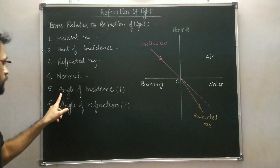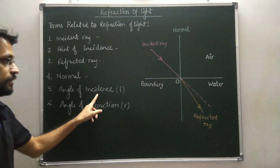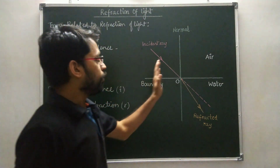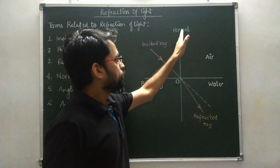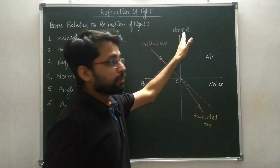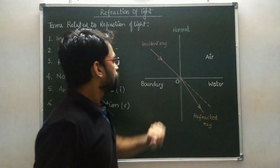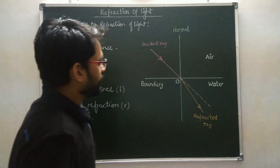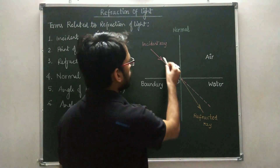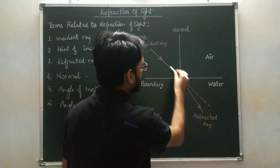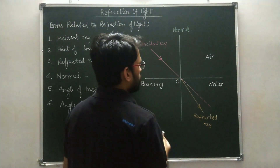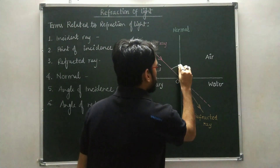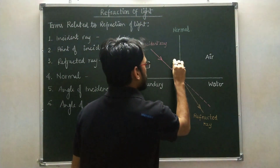The next term is angle of incidence. As I have told you, all the angles are measured from this normal line — this is the reference line. So, the angle of incidence is the angle between the incident ray and the normal. Here, this is the angle of incidence, I.